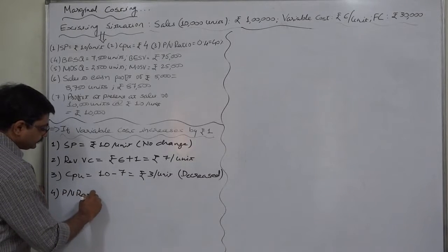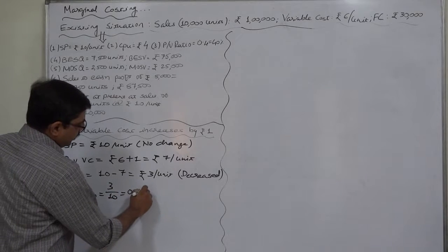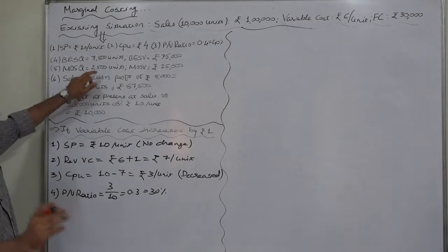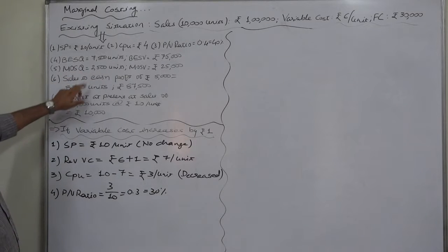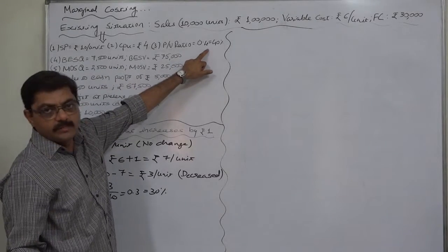3 divided by 10, that is 0.3 or 30%. If we compare it with the existing situation, it has decreased because it is 40% at present.